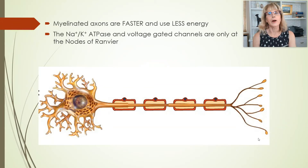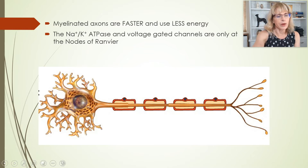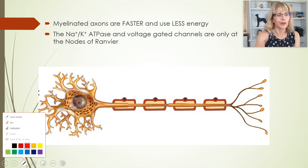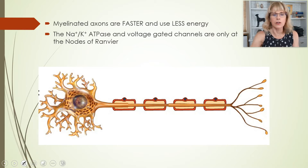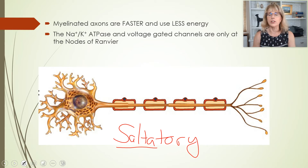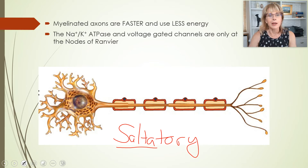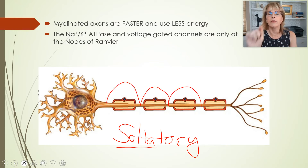We left off talking about myelinated axons. Myelinated axons use a type of action potential called saltatory conduction. I don't know if anyone speaks Spanish, but saltar means to hop or to jump. Saltatory conduction got that name because the action potential hops its way from one node of Ranvier to the other.